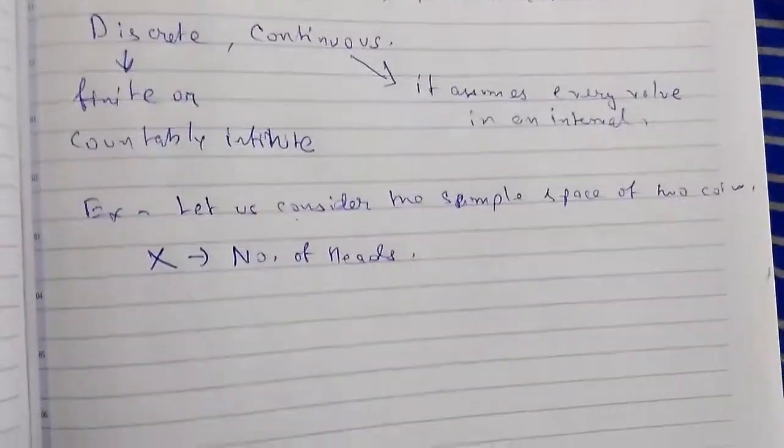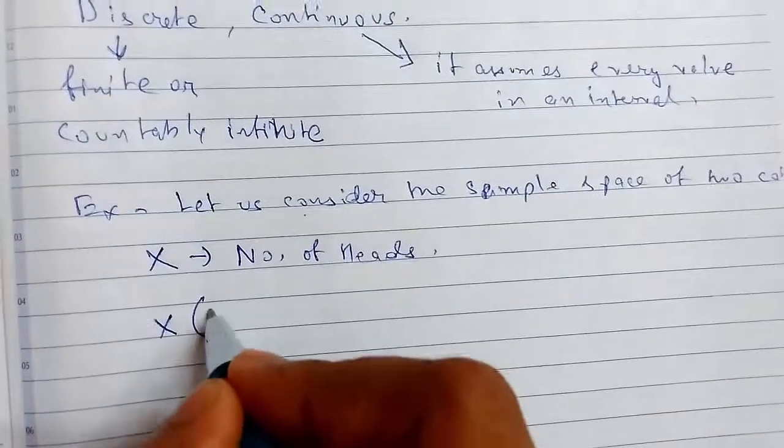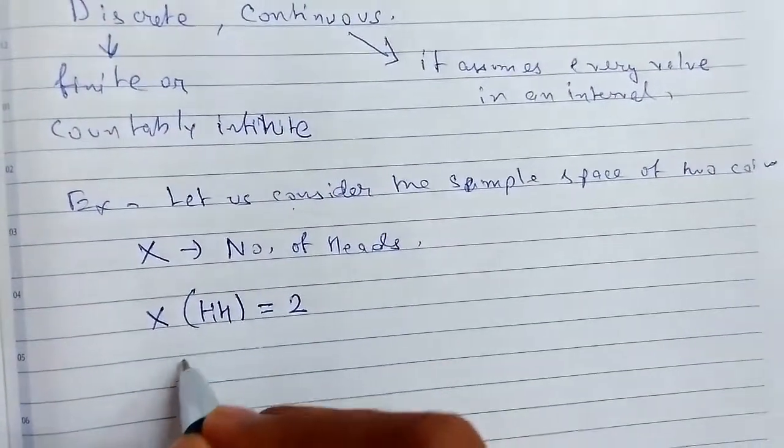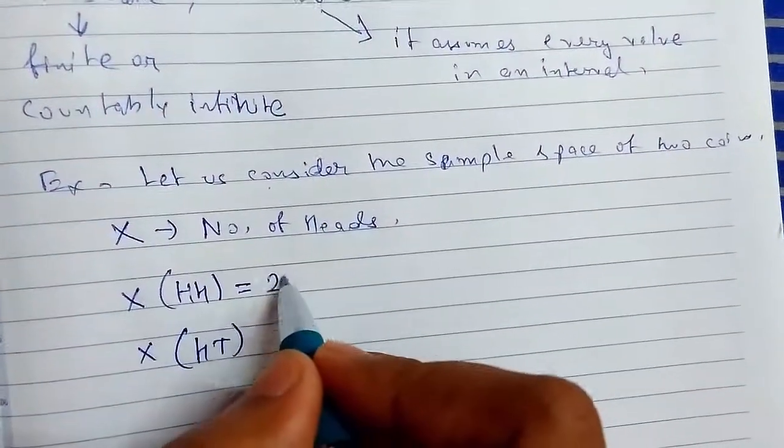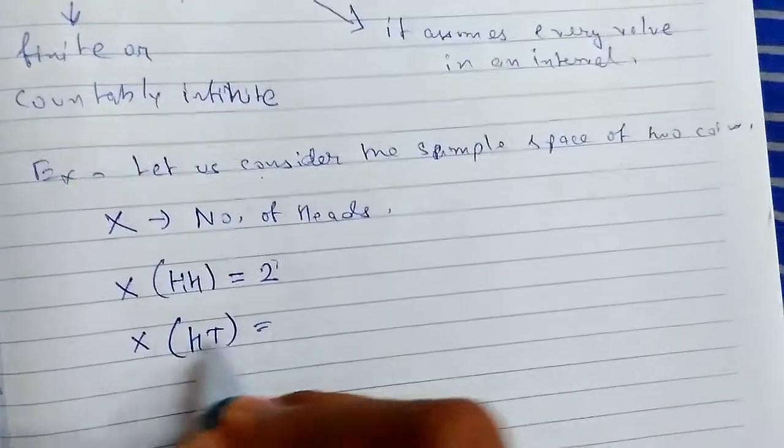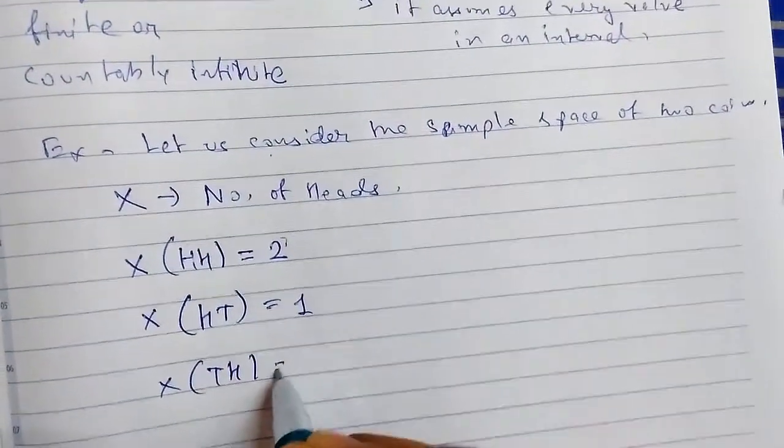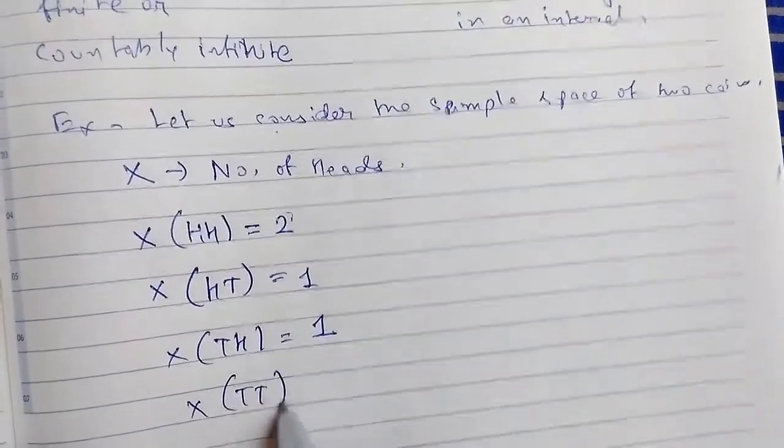So x is an event which we will get by number of heads. So for x suppose we have two heads, we will get two. For single head we have one. And for no head we have something like this: tail tail, both are tail and both are head.